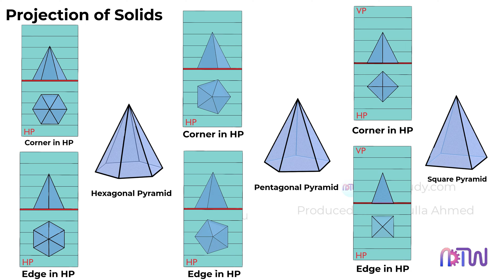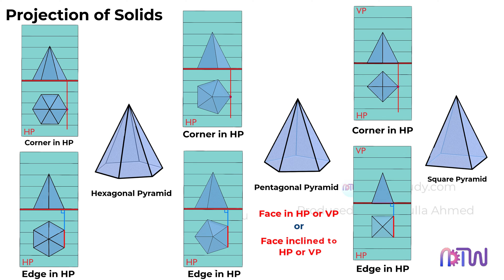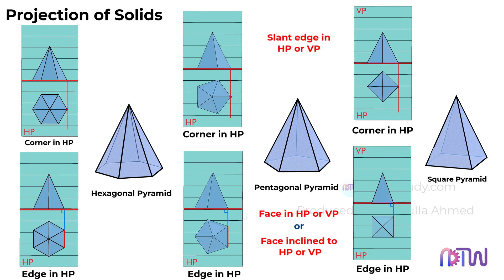I hope this clarifies any doubts about the orientation for drawing the top view in the true shape of the solid. When one of the edges of the base is in HP, the orientation of the top view is such that one of its edges of the base is perpendicular to the reference line. When its corner is resting on HP, the orientation is such that its corner rests on the line perpendicular to HP and points towards the right side. Furthermore, if the question specifies a face in HP or VP, or a face inclined to HP or VP, we will draw the top views of the shapes accordingly for their respective solids. And if it mentions a slant edge in HP or VP, or a corner in HP or VP, we will draw the top view of the respective shapes in these orientations.